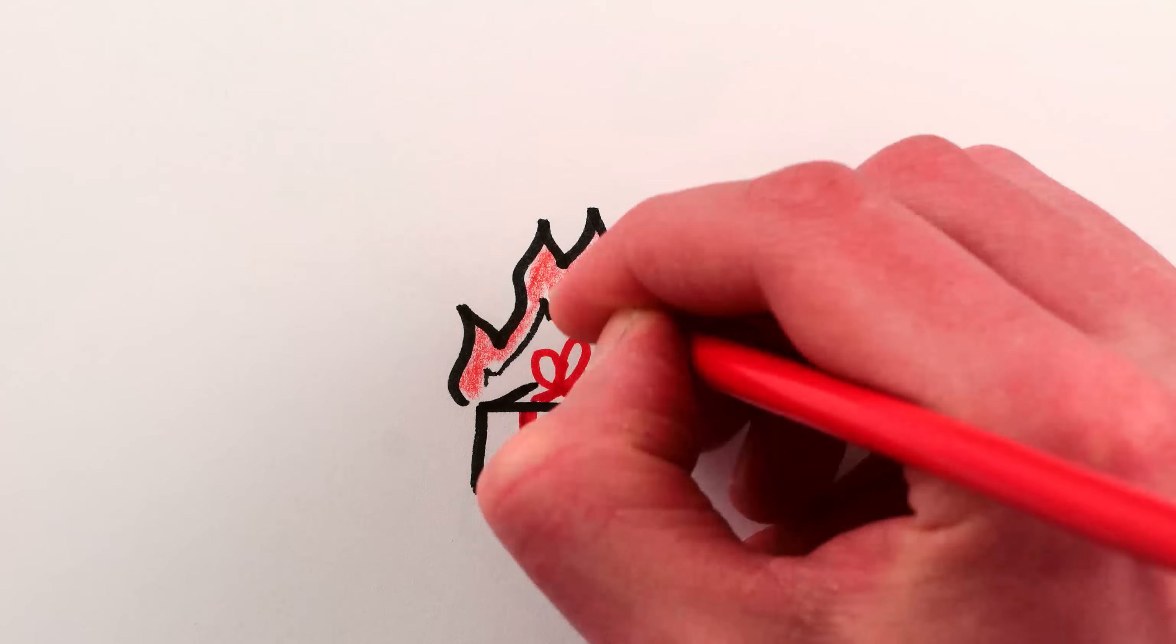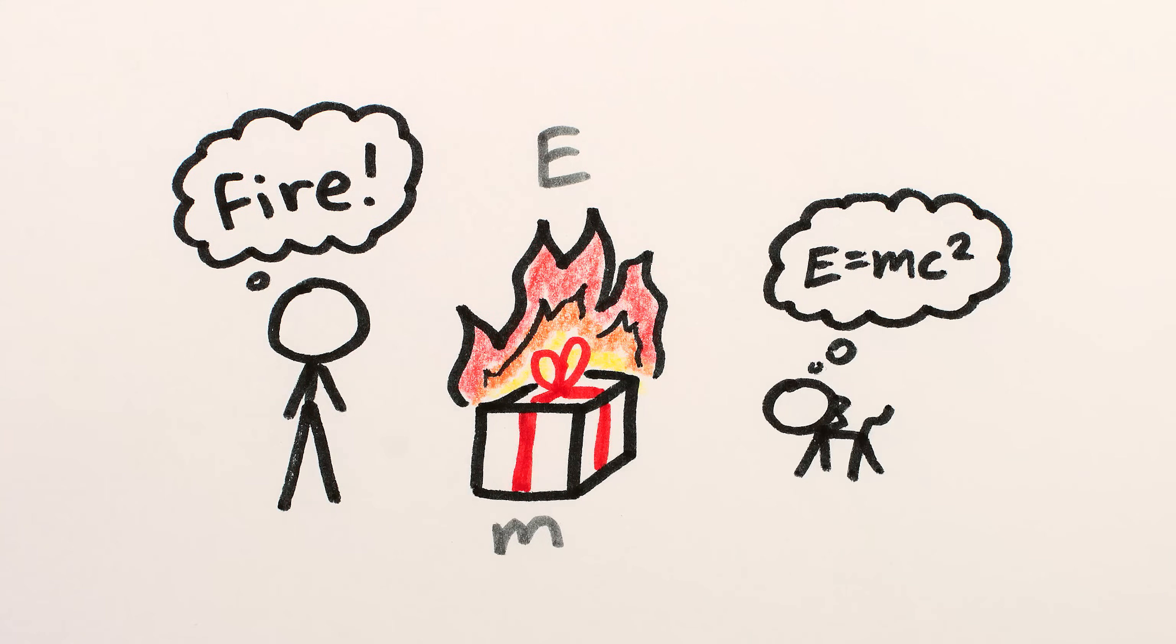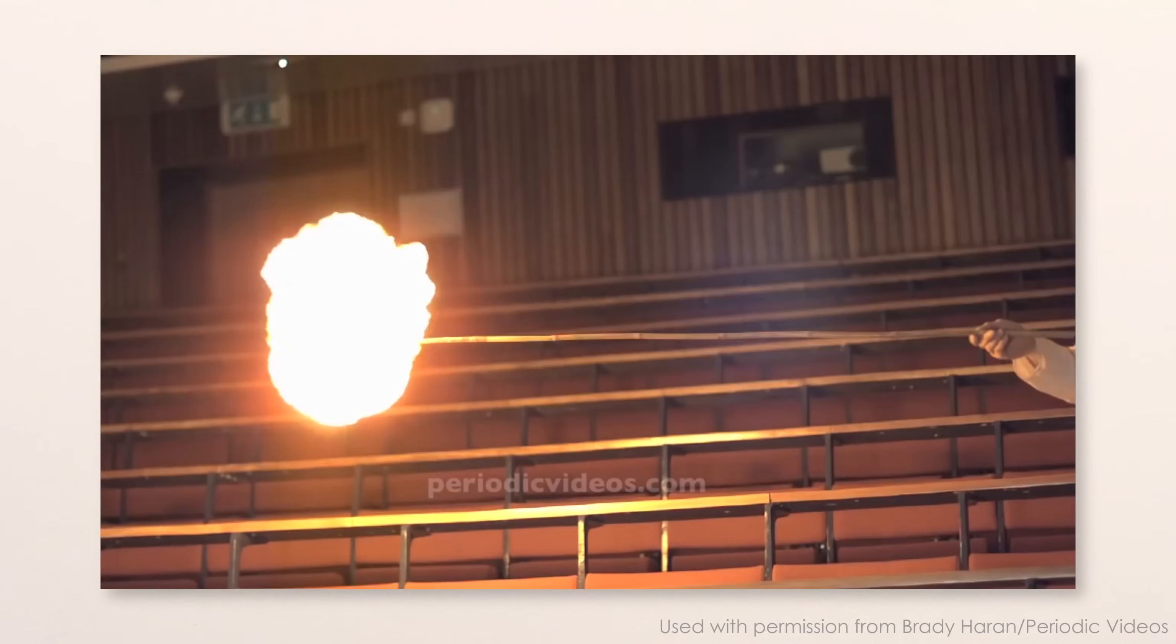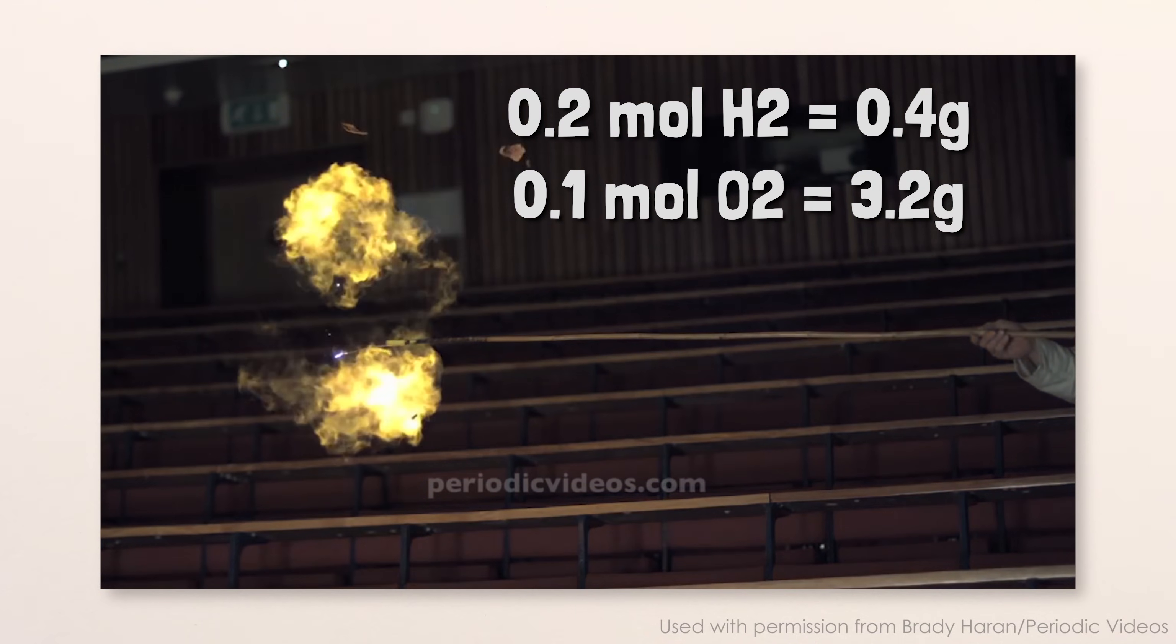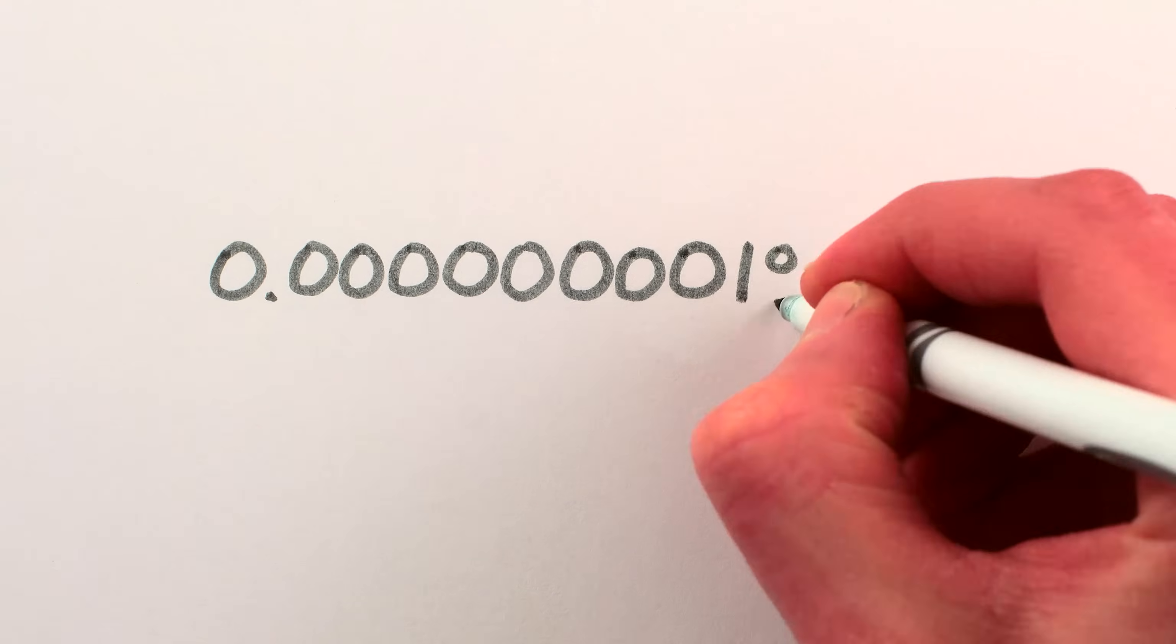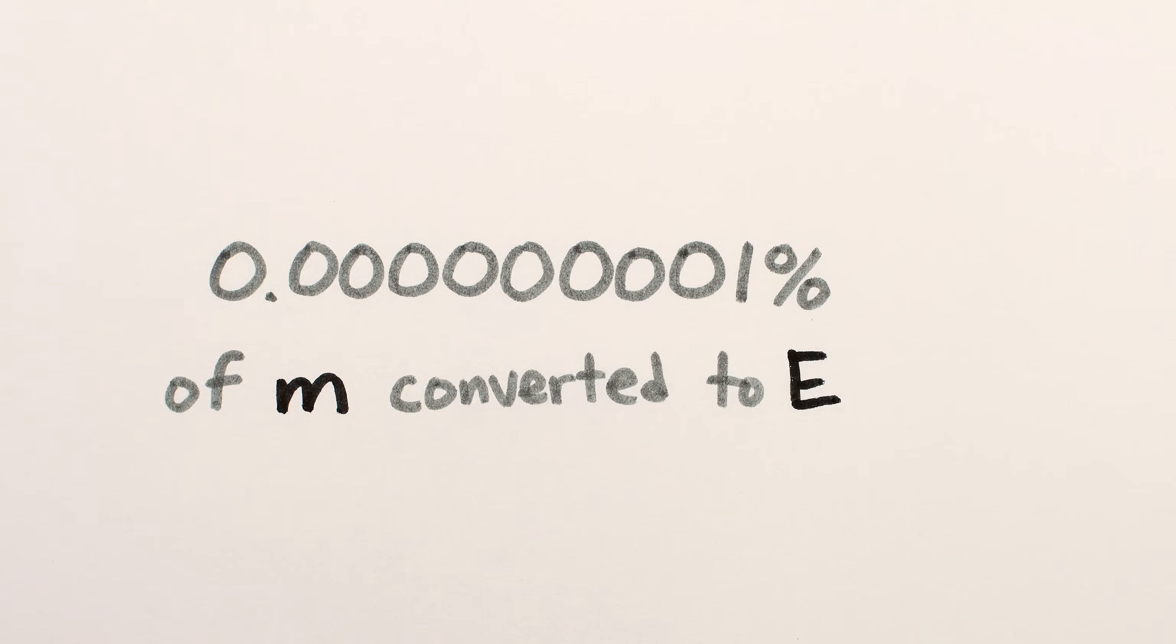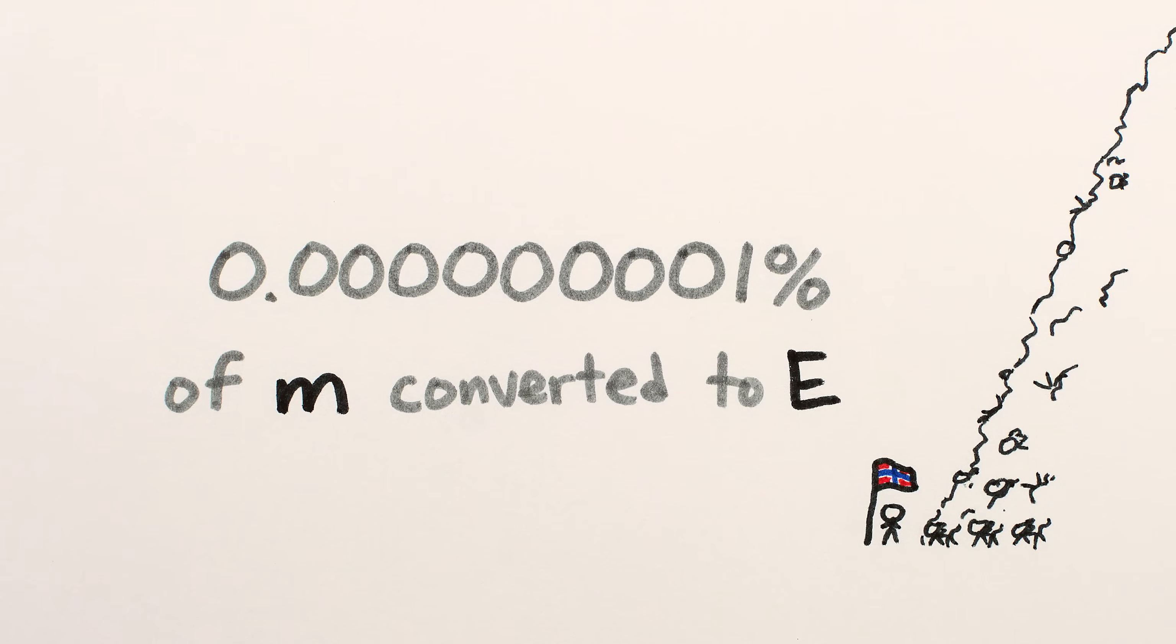To start, chemical reactions are so bad at extracting energy from mass that we don't even think about what they're doing as converting mass to energy, even though it is. As an illustration, reacting a balloon of hydrogen and oxygen gases creates a nice big explosion, but the end products of the reaction only weigh half a nanogram less than the initial reactants, which amounts to a measly 0.000000001% efficiency of converting mass into energy. At that rate, you'd need 10 billion cats to power Norway for a year.